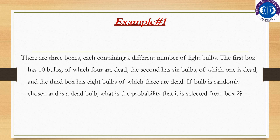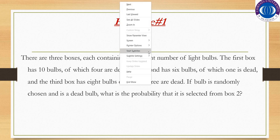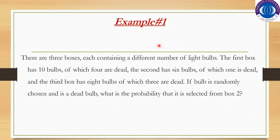There are three boxes, each containing a different number of light bulbs. The first box has 10 bulbs of which 4 are dead; the second has 6 bulbs of which 1 is dead; and the third box has 8 bulbs of which 3 are dead. If a bulb is randomly chosen and is a dead bulb, what is the probability that it is selected from box 2?